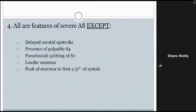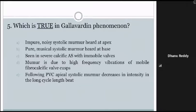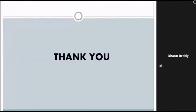All are features of severe aortic stenosis except peak of murmur in the first third of systole — in severe aortic stenosis, the murmur peaks in the later third of systole. Regarding Gallavardin phenomenon: the impure noisy murmur is heard at the base and the pure musical systolic murmur at the apex; it is seen in severe calcific aortic stenosis with relatively mobile walls; the murmur is due to high-frequency vibrations of fibrocalcific cusps; and following PVC, the apical systolic murmur increases in intensity in the long cycle-length beat.